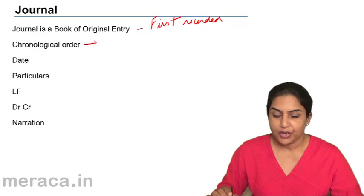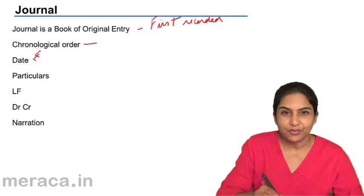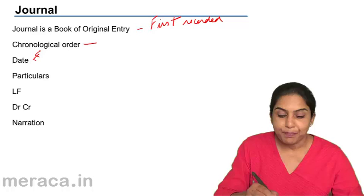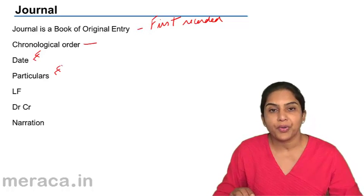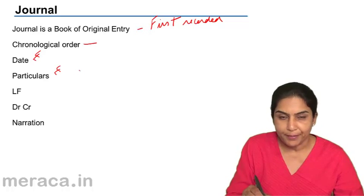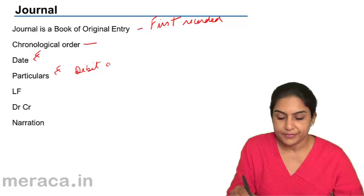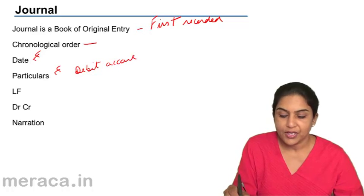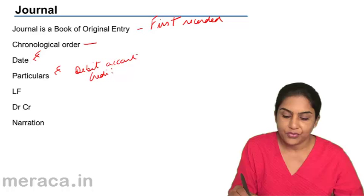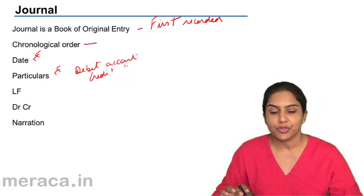This journal book has the date, so we will know the date of the transaction. It has a particulars column. What do we write in the particulars column? We write the account to be debited and the account to be credited. There is a way in which we write. We will come to the format.